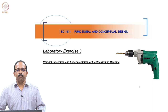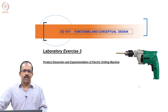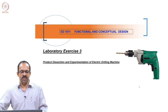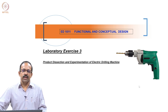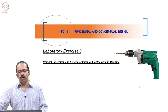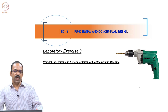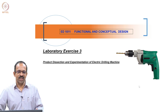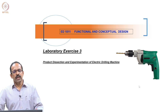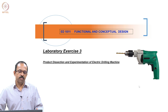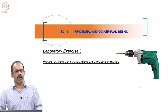Hello everyone, welcome back to the lab session. This is the third lab session we are having. In the last session, you had a product dissection experimentation for a printer, and you saw how to do a formal or systematic way of dissecting a product, identifying the parts, then looking at the assembly structure and preparing a report. Today we will repeat the same kind of experiment for a different product.